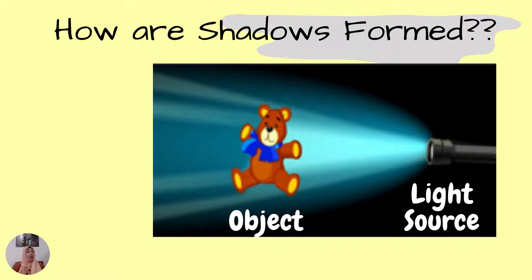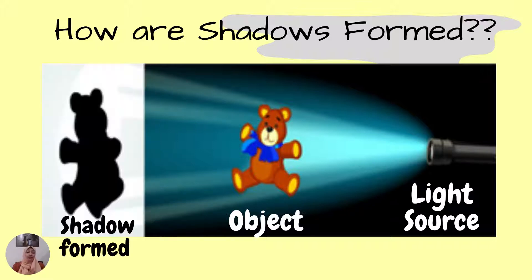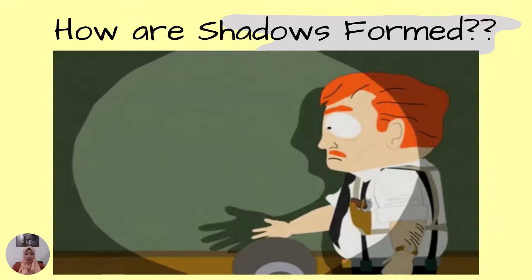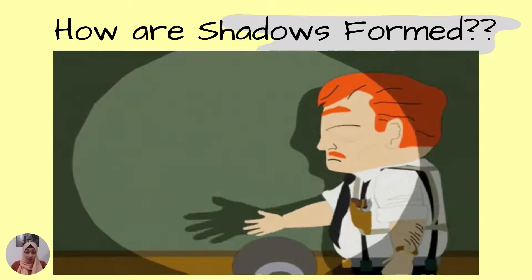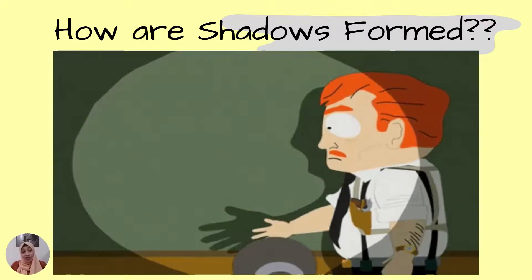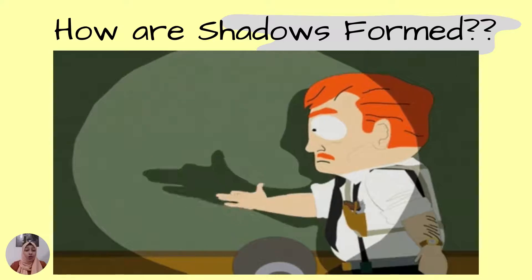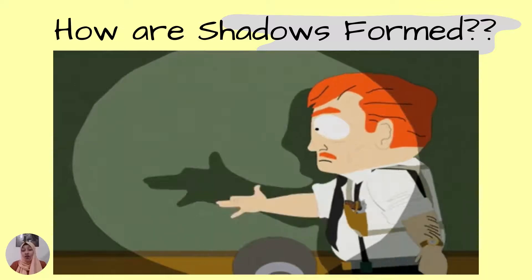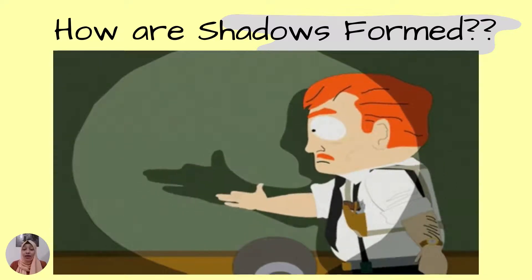The teddy is blocking the passage of light from the torch. The place where the teddy is blocking the light — that is where the shadow will form, and the space surrounding the teddy will still have light. Now look at this man. He is forming a shadow on the wall by using his hand to block the light coming from the torch. Shadows are formed when light is blocked by an object.